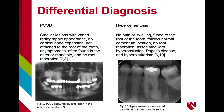The differential diagnosis for cementoblastoma should include periapical osseous dysplasia (PCOD), hypercementosis, condensing osteitis (also known as sclerosing osteitis), and dense bone island, or idiopathic osteosclerosis.